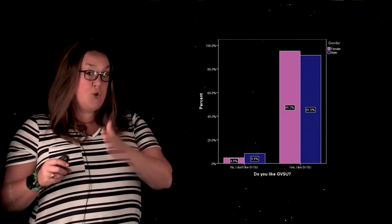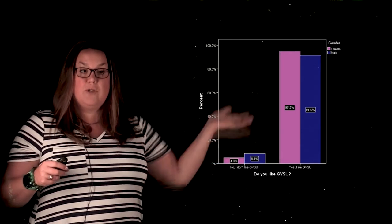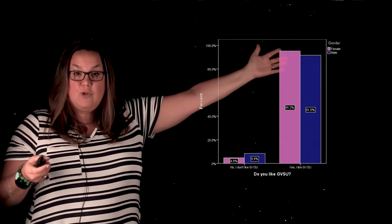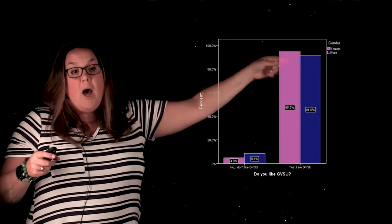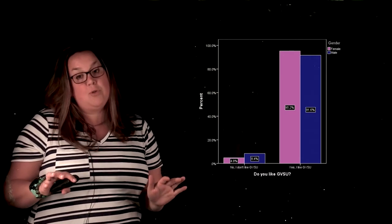However, if there's no relationship, so if you have two categorical variables as we have here, do you like GVSU and sex or gender? If the height of the bars is very similar, that means that there's probably no relationship between the two things.